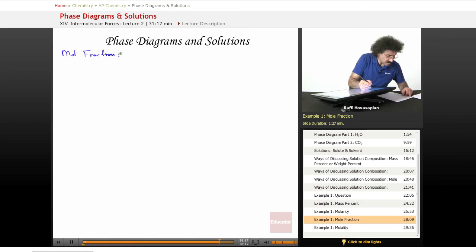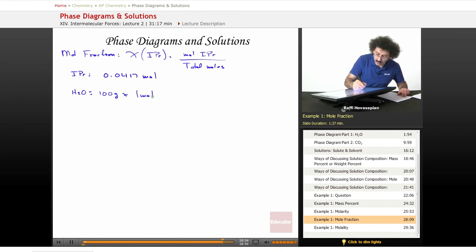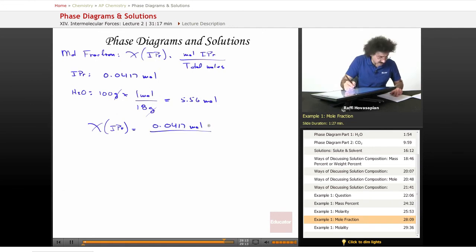Mole fraction. The chi of the isopropanol is equal to the moles of the isopropanol, which we got from the previous one, over the total moles. We said that our isopropanol contained 0.0417 mole. H2O, on the other hand, we have 100 grams of it, and one mole of H2O is 18 grams. We end up with 5.56 mole. Therefore, our chi of isopropanol is equal to 0.0417 mole divided by 5.56 plus 0.0417. You end up with 0.0074.